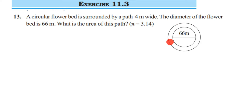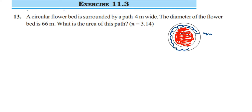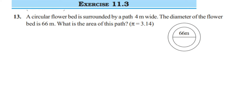A figure is given to us. This is the flower bed, which is in the shape of a circle. The red colored one I am showing you is the flower bed, and there is a path 4 meters wide surrounding it. We have to find out the area of this path, shown in blue.